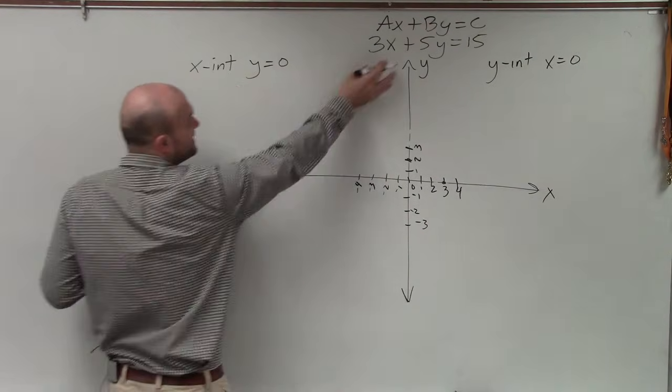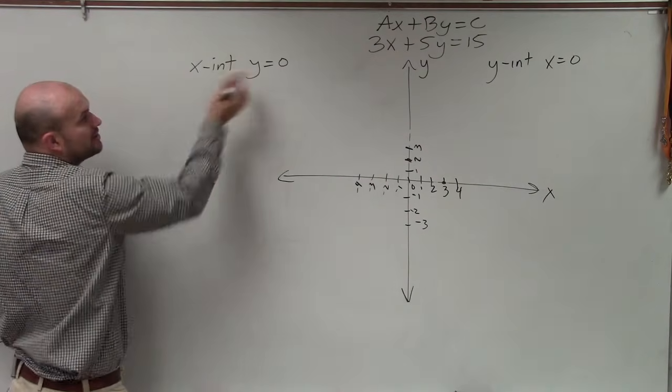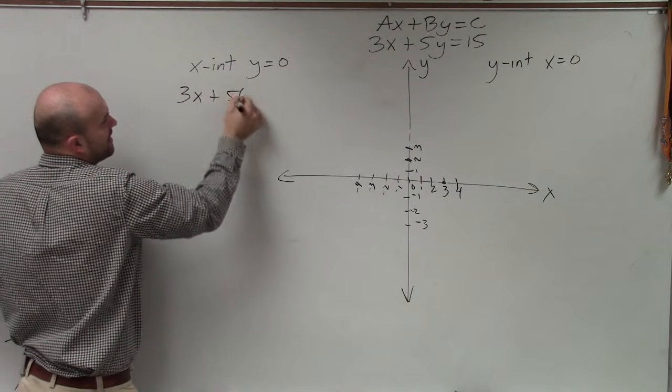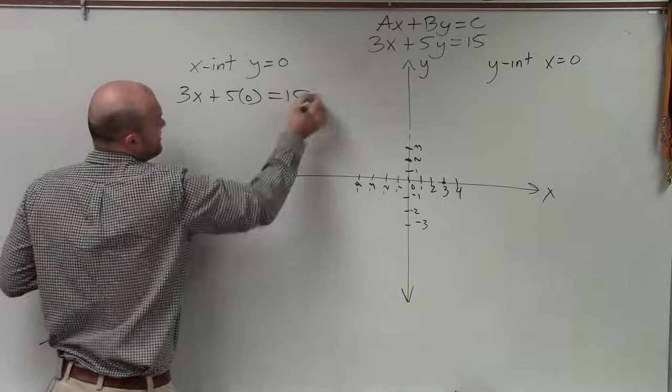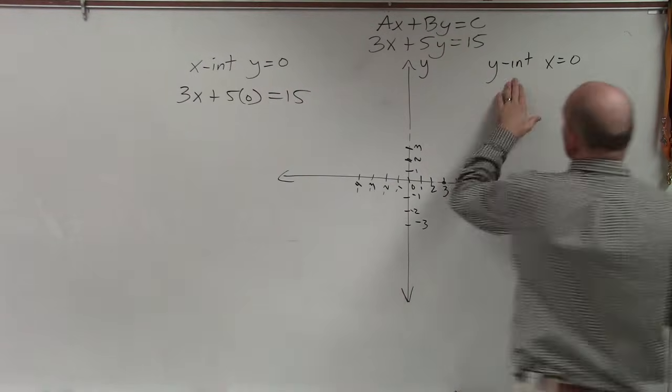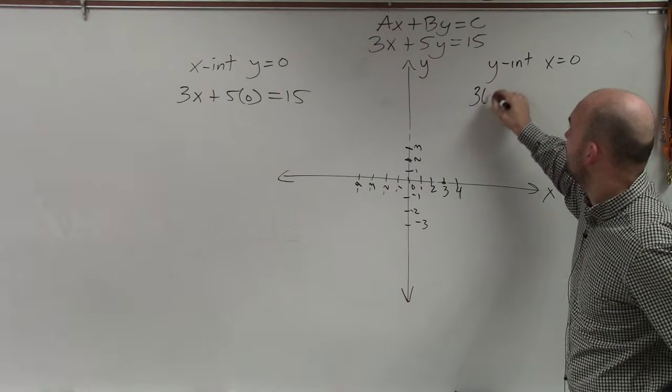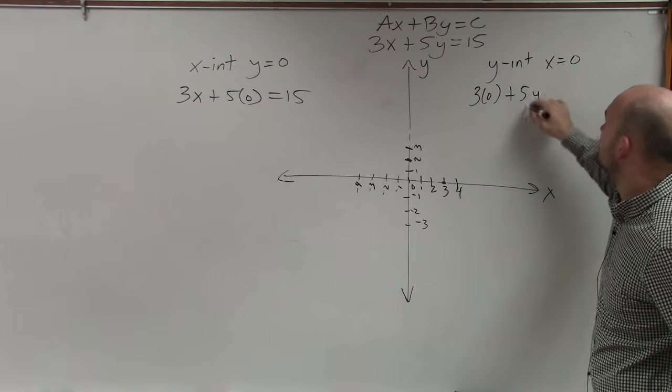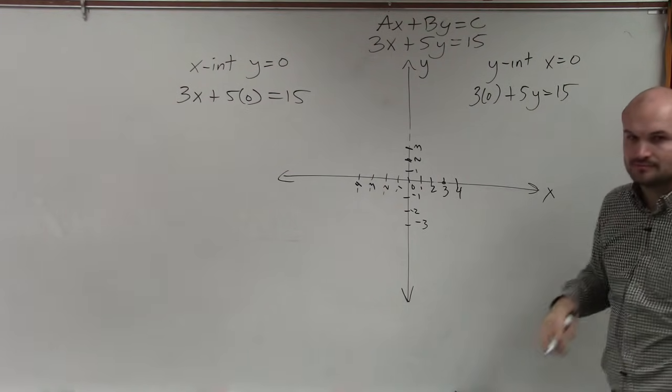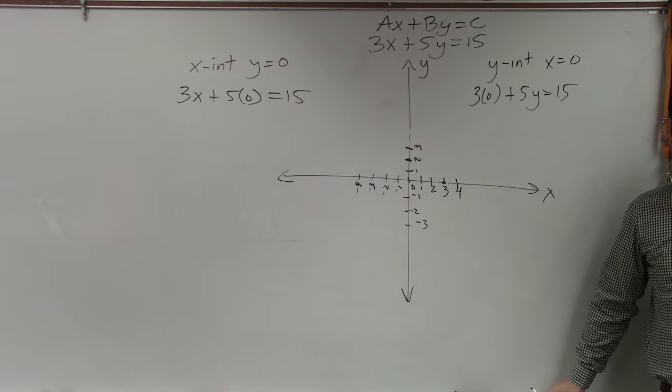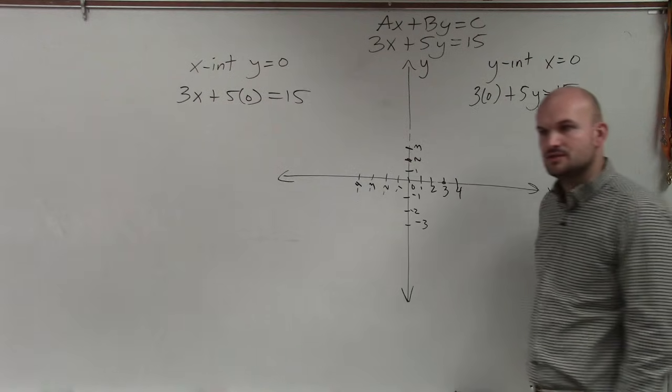So to find the x-intercept, all I'm going to do is put 0 in for y. So I have 3x + 5(0) = 15. To find the y-intercept, I'm just going to put a 0 in for x: 3(0) + 5y = 15. You guys see what I did? Any questions?